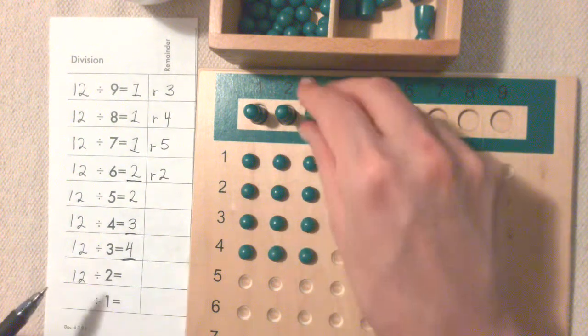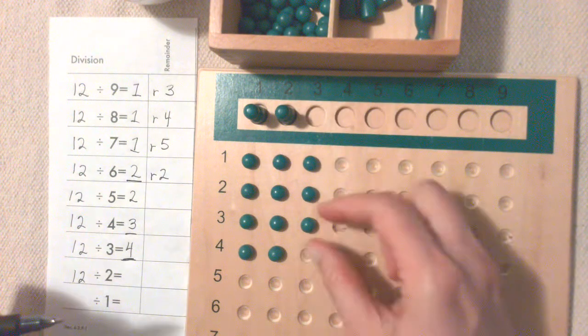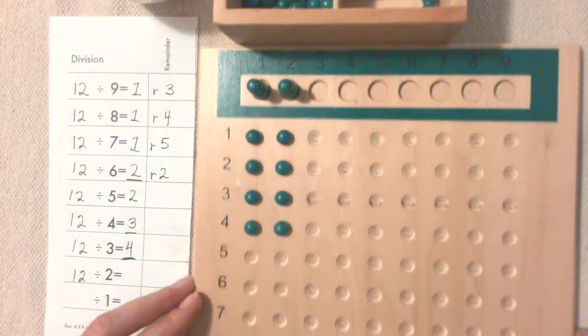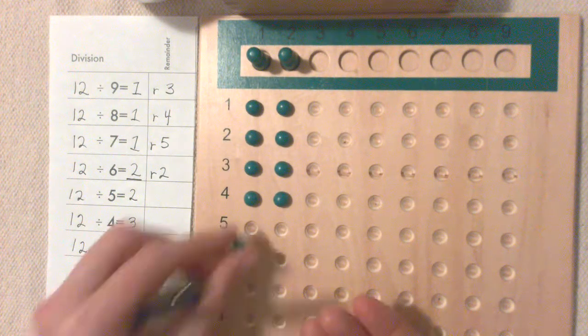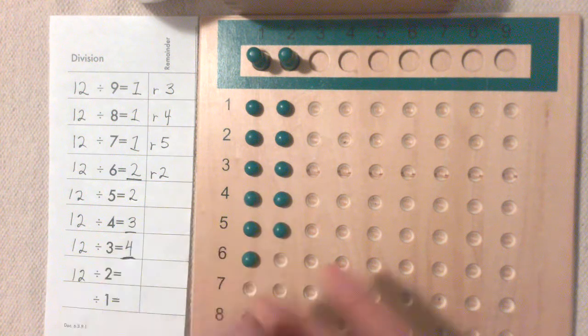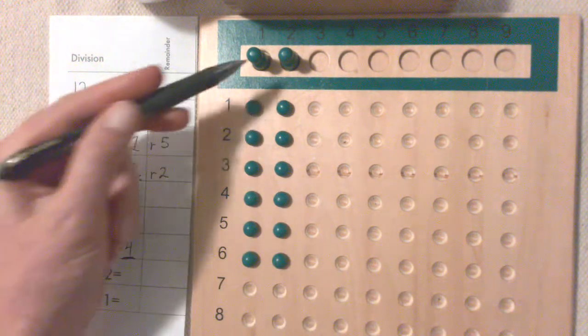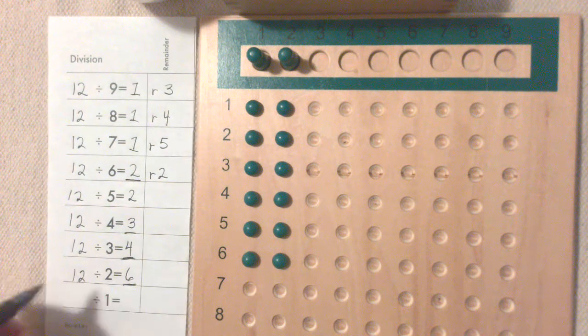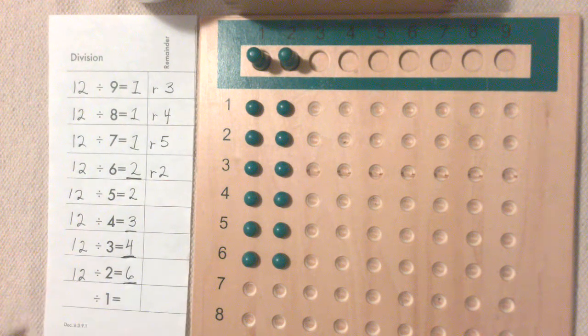12 divided by 2. Each Skittle gets six. 12 divided by 2 equals six.